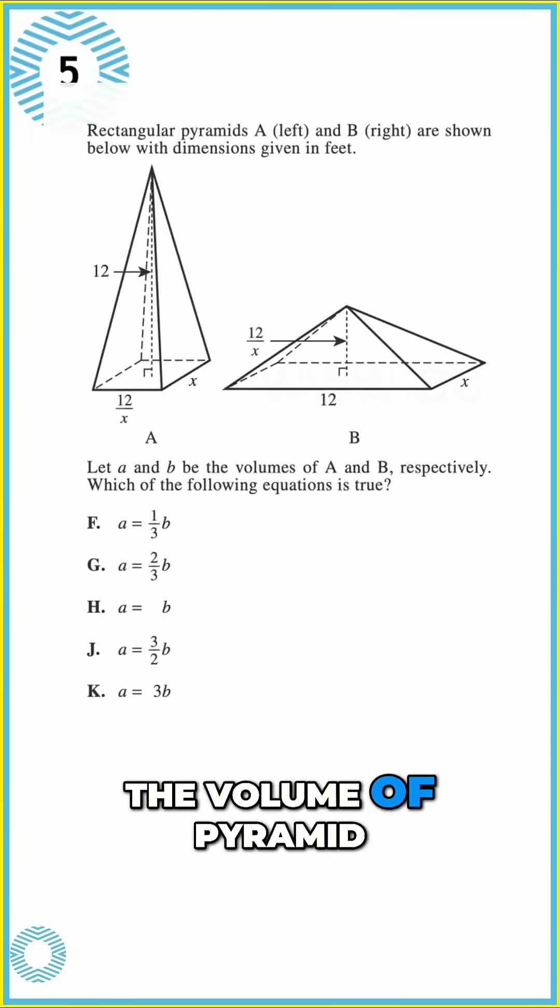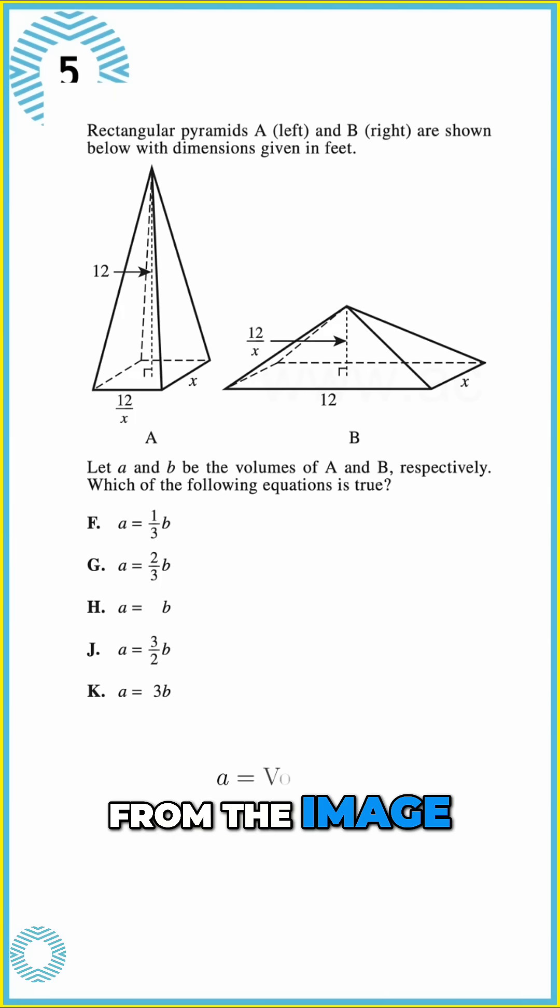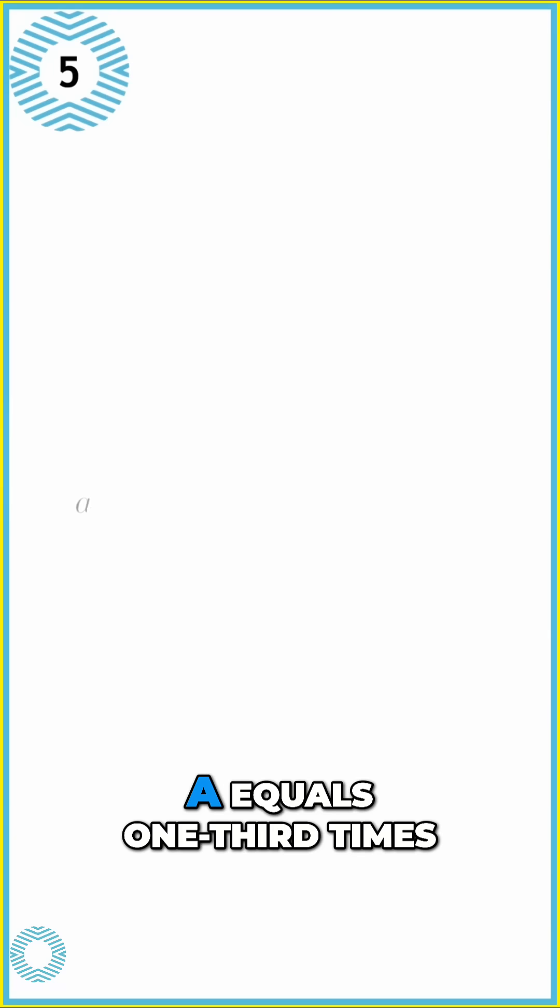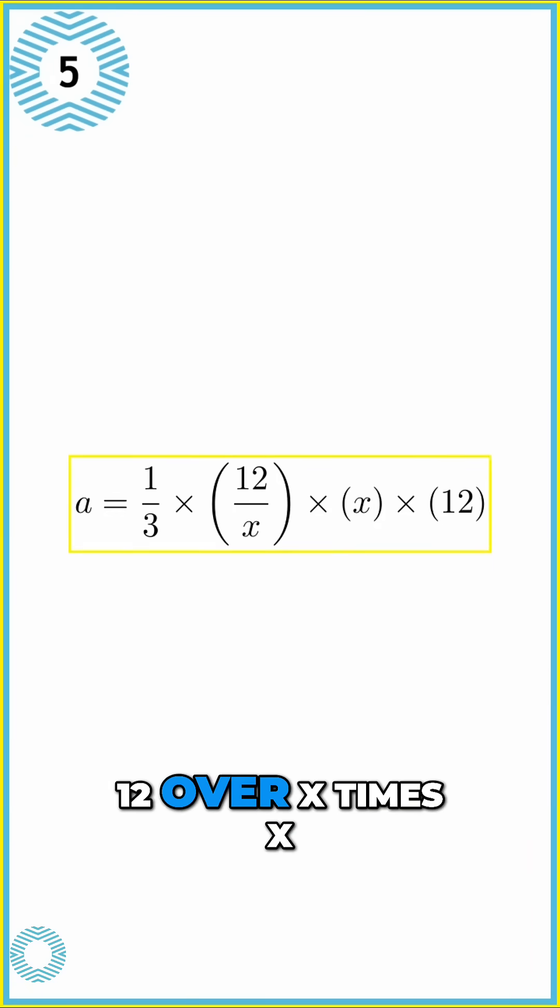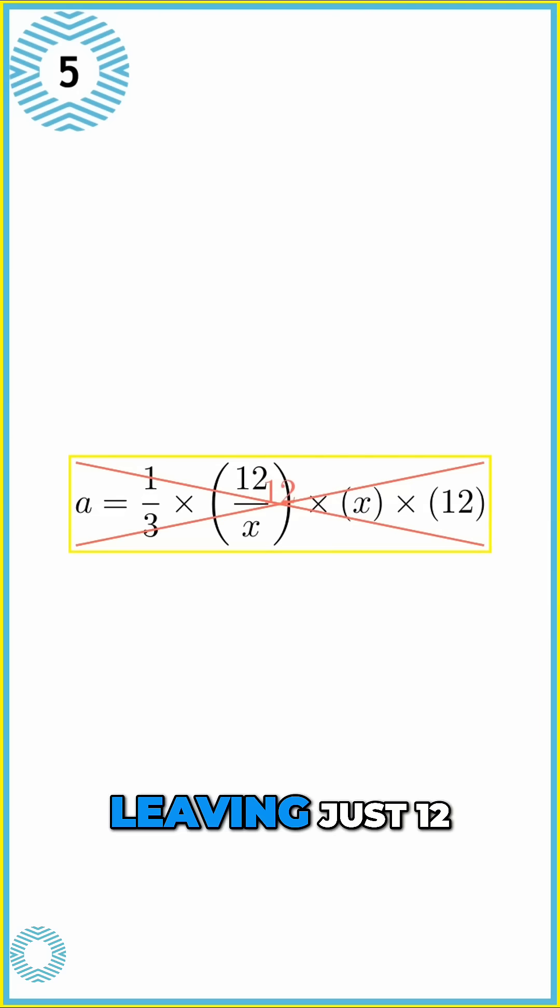Let's calculate A, the volume of pyramid A. From the image, the base dimensions are 12 over X and X. The height is 12. Plugging into our formula, A equals one-third times 12 over X times X times 12. Look closely at the base part. 12 over X times X, the X's cancel out, leaving just 12.